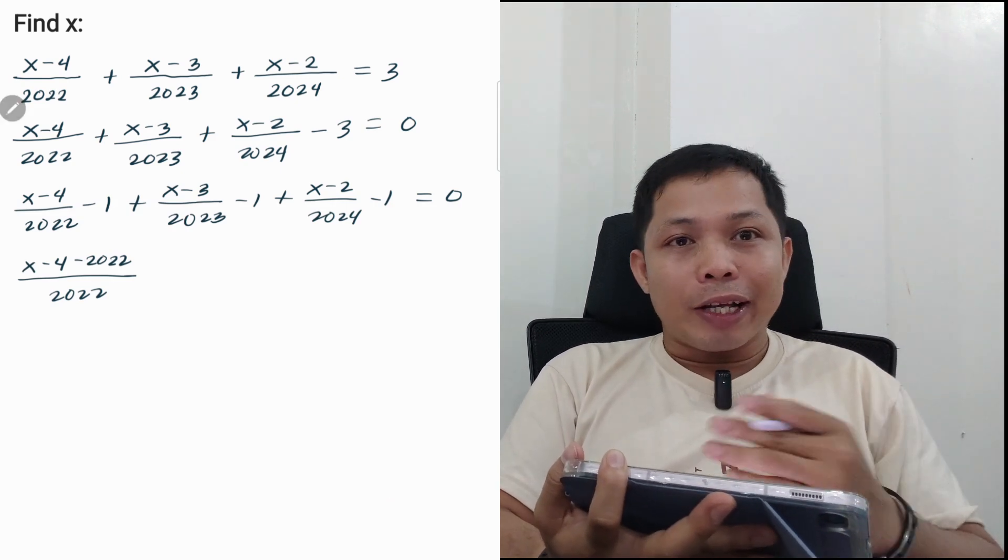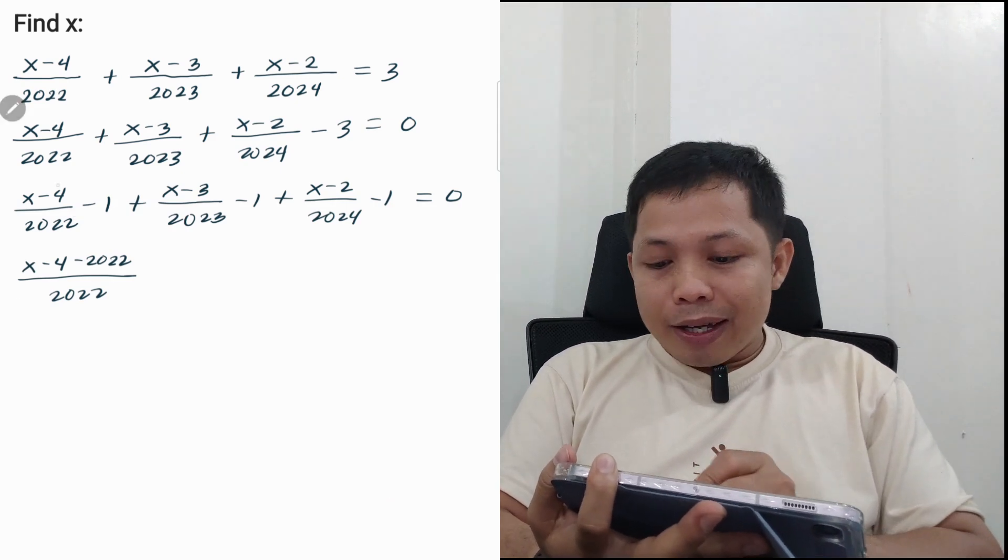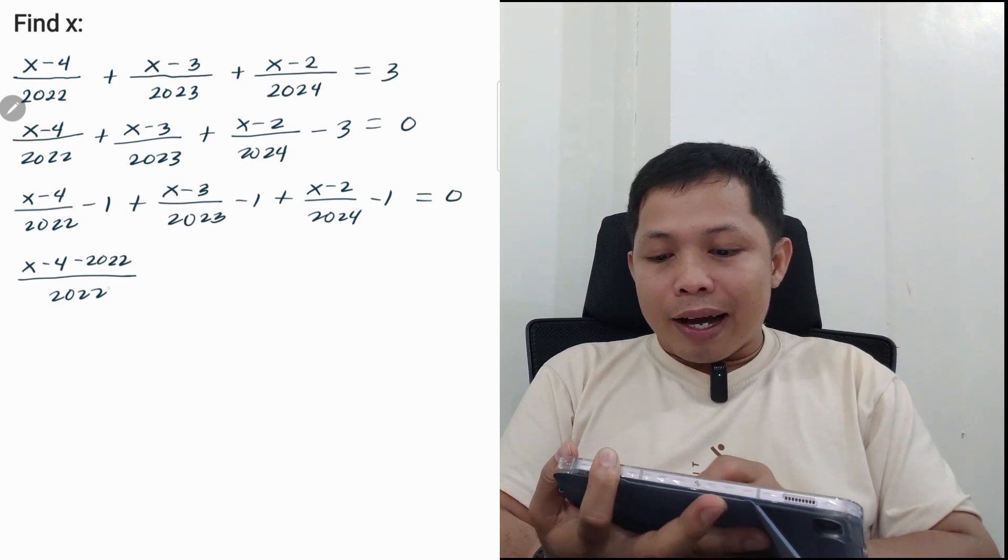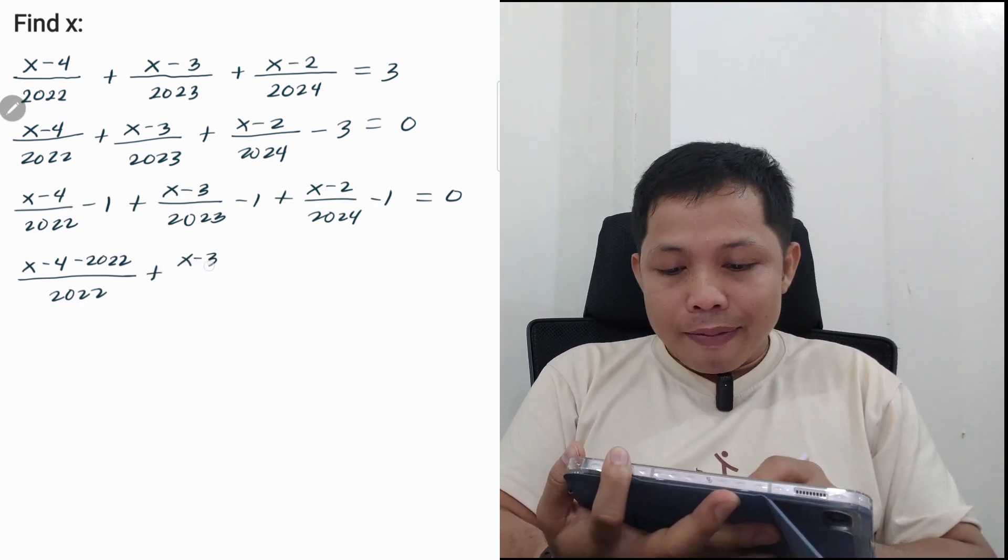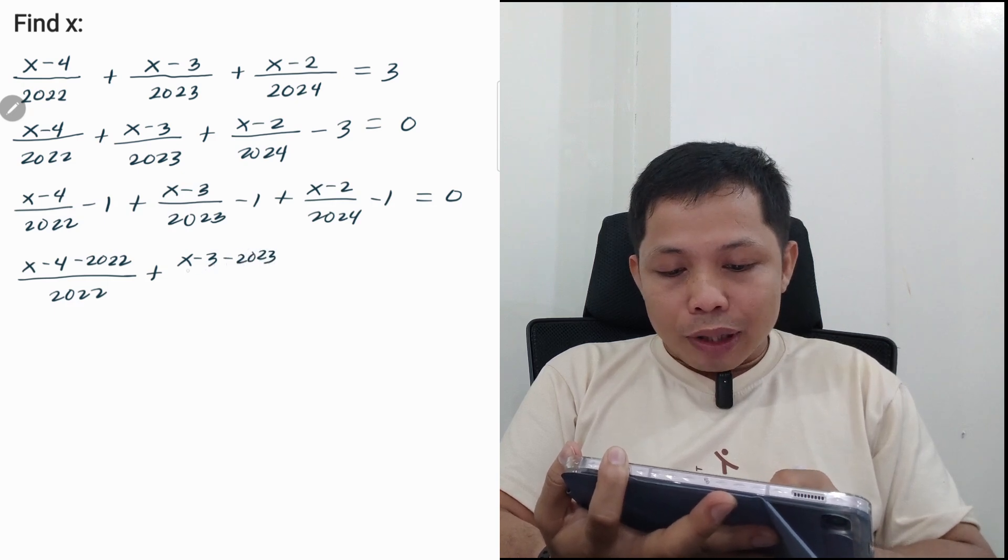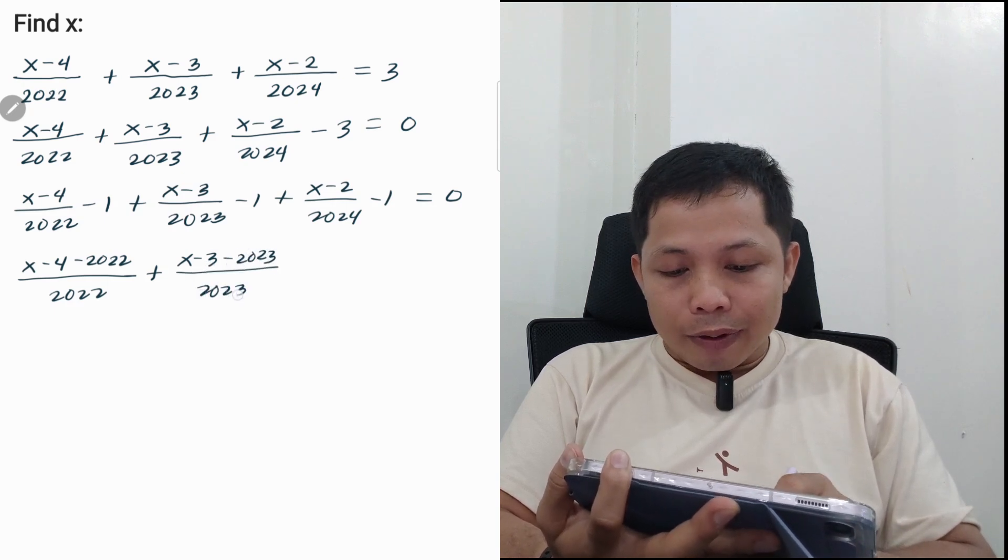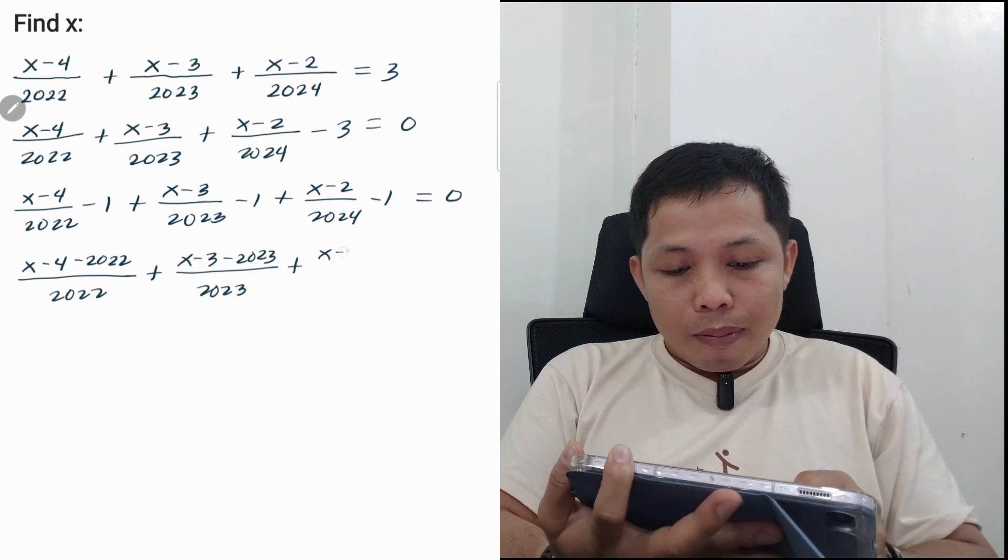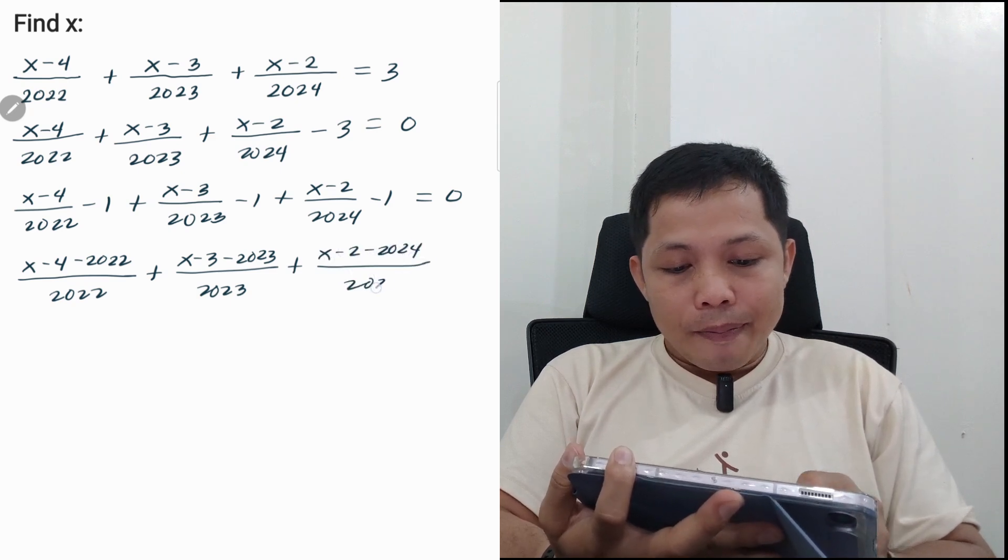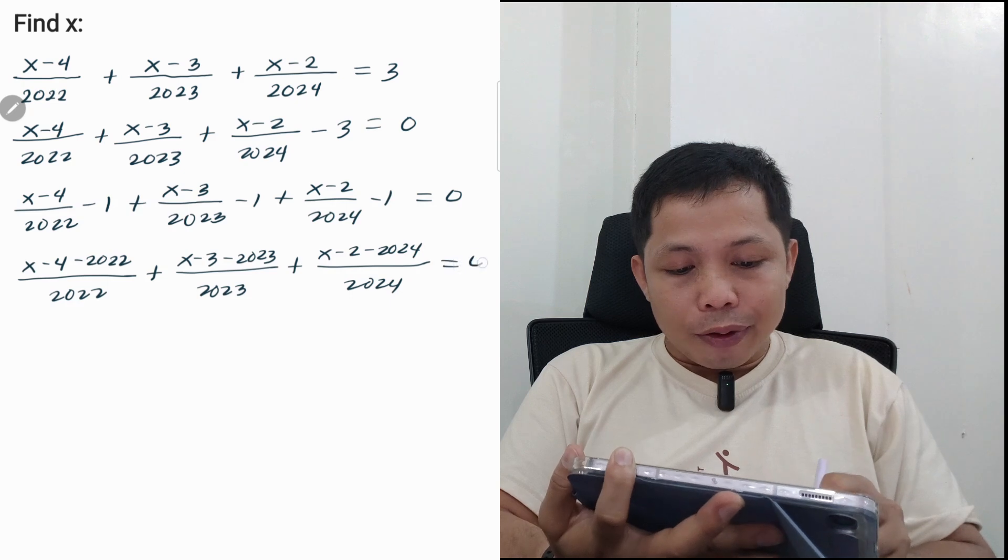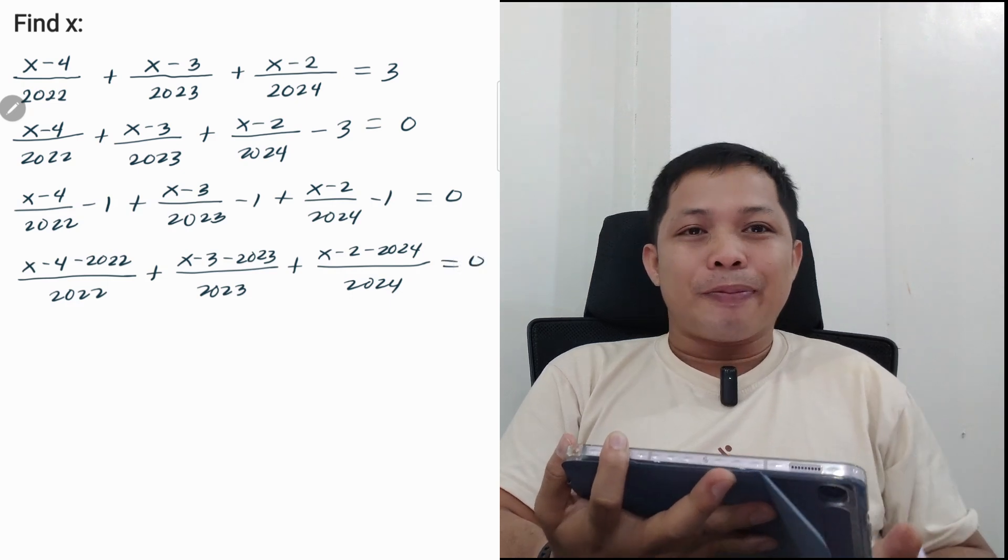Now they have the same denominator, so we can write this expression as: (x - 3 - 2023)/2023 + (x - 2 - 2024)/2024, and everything is equal to 0.